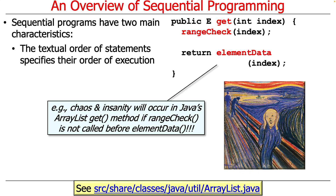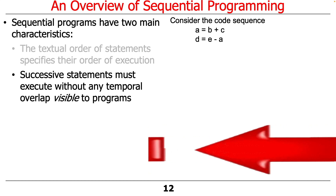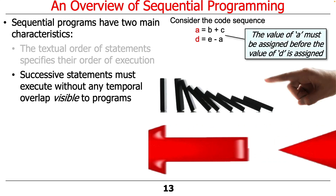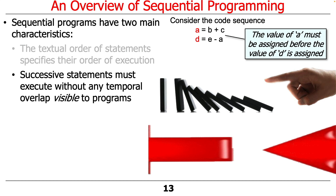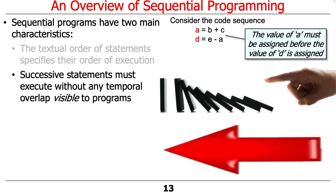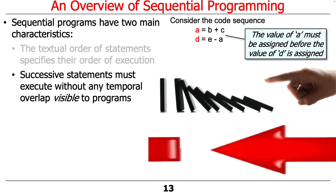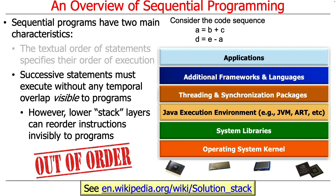The other characteristic of sequential programs is that successive statements must execute without any temporal overlap that's visible to programs. For example, we have a code sequence where variable a is assigned b plus c, and d is assigned the result of e minus a. What you want is the value of a to have been assigned before the value of d is assigned — if that doesn't occur, chaos and insanity will ensue. Even though in a sequential program it must behave as if there was no temporal overlap, lower layers in the stack may reorder instructions in a way that's invisible to programs.